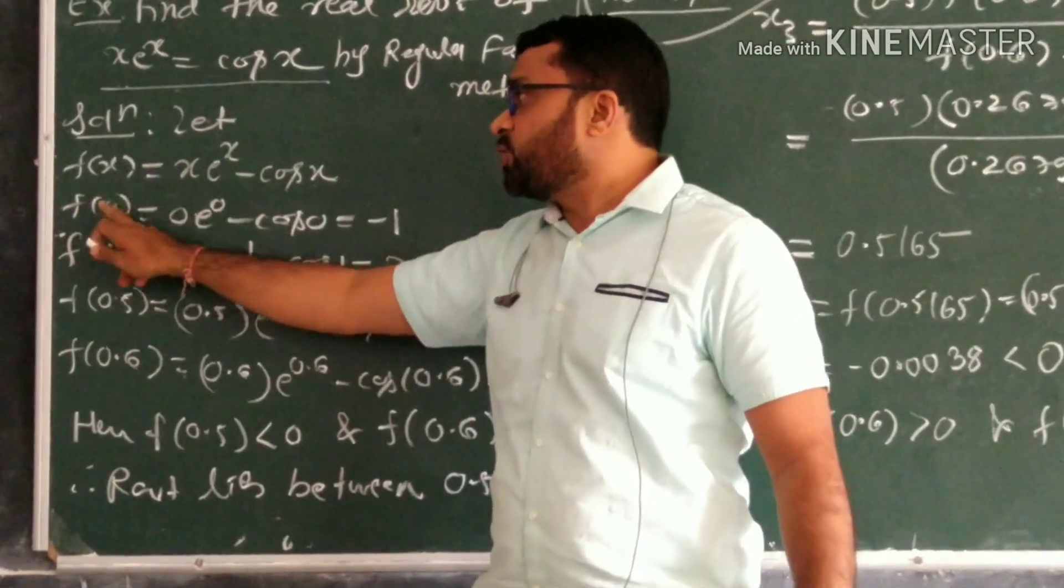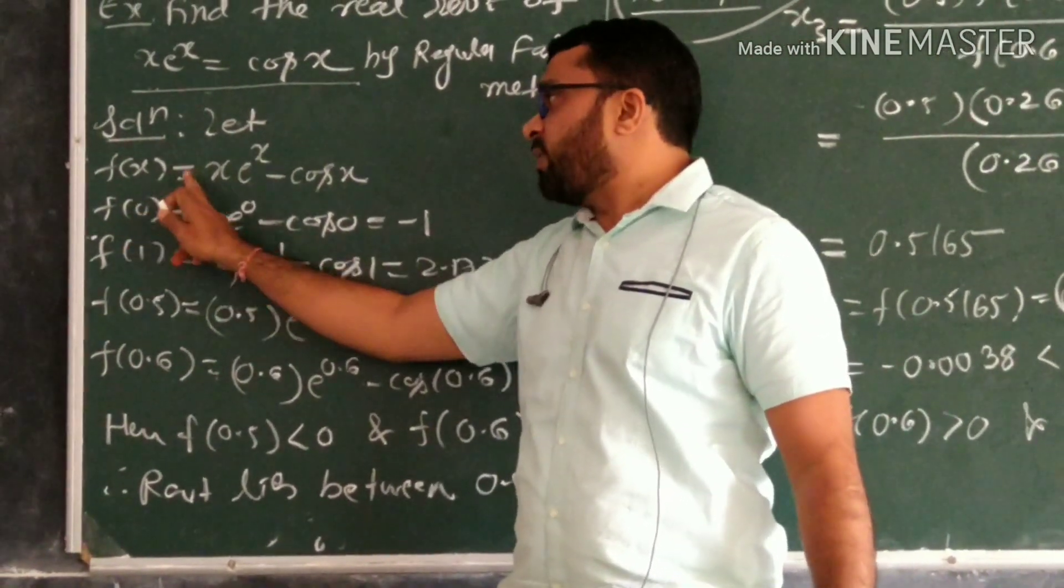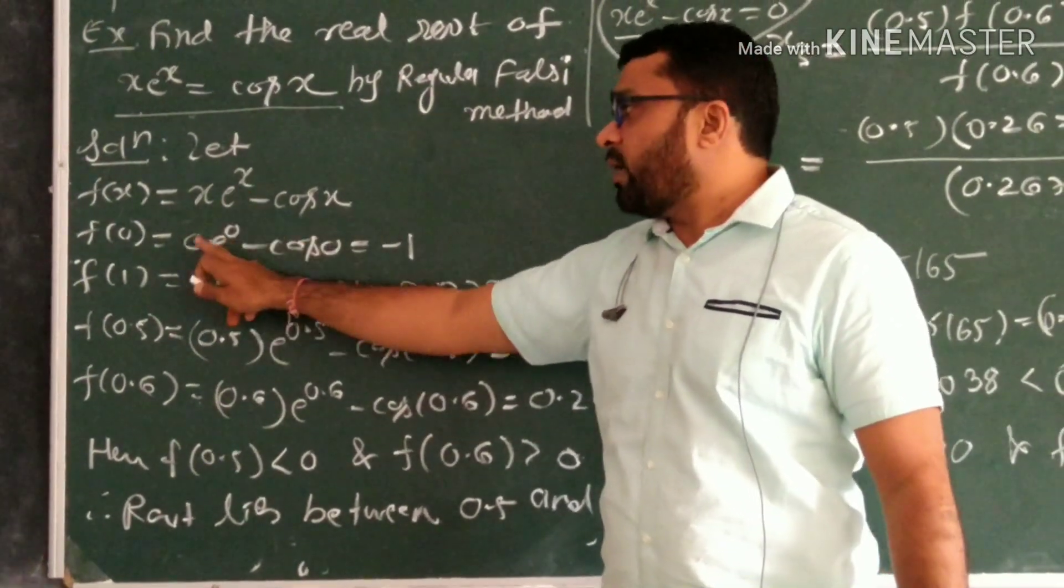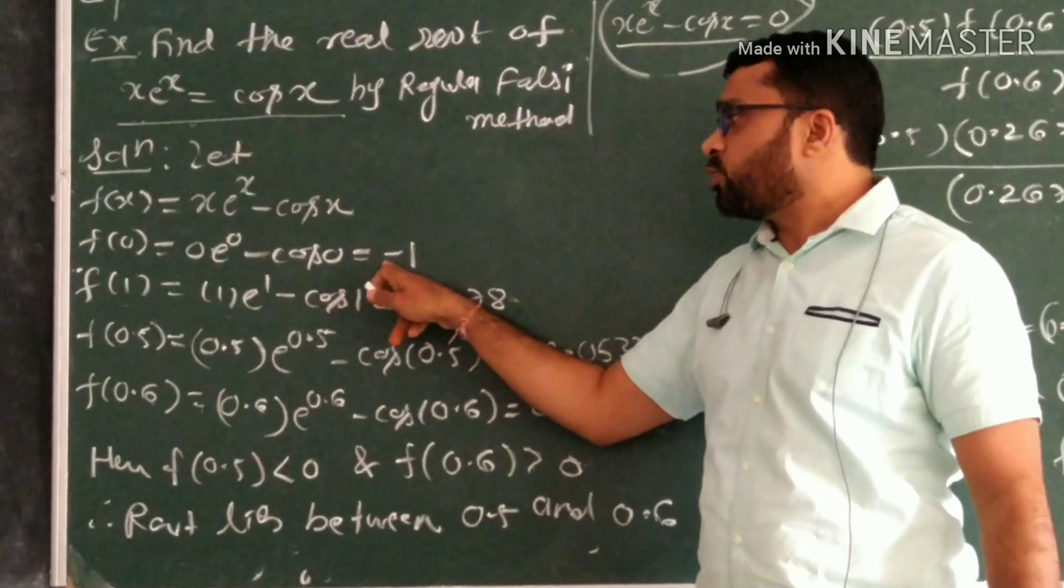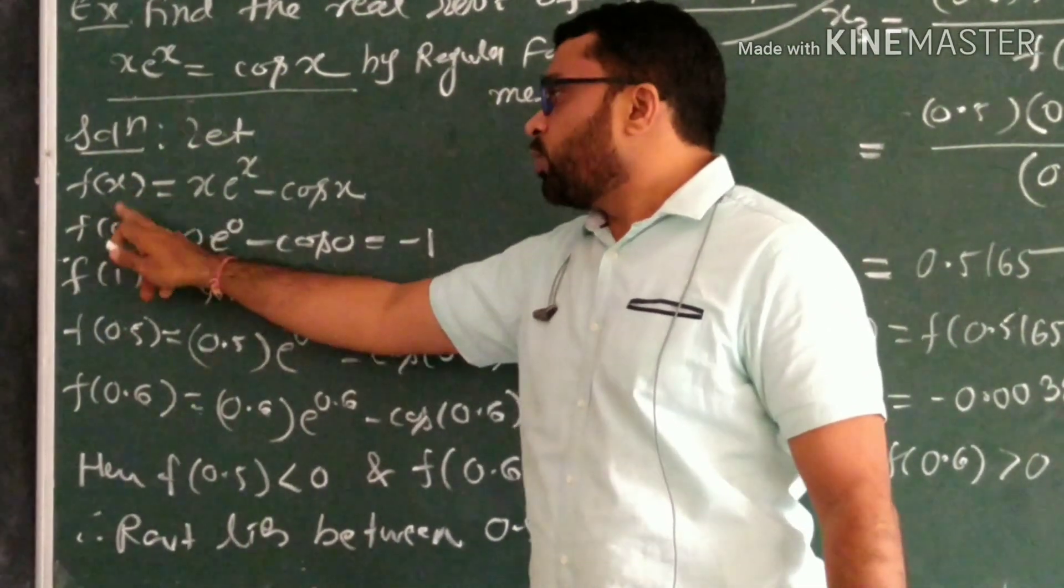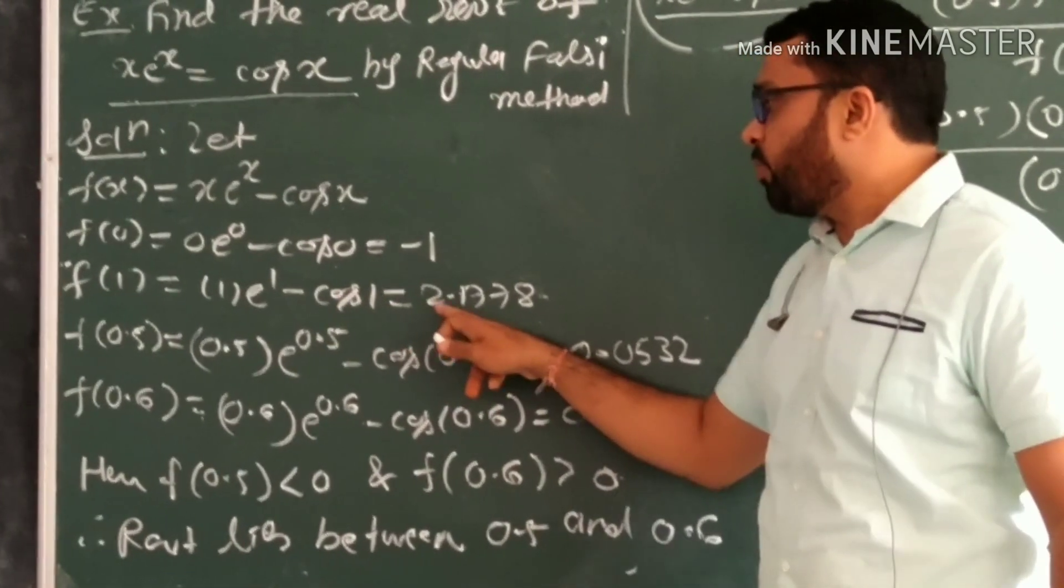Now we will start putting zero here. If I put zero, I get 0·e^0 - cos(0). e^0 is 1, this is 0, cos(0) is 1, so it's -1. Then f(1): 1 put here, so function value at 1 is coming out to be 2.1778.